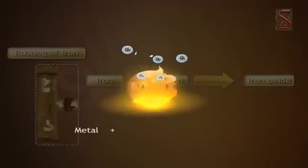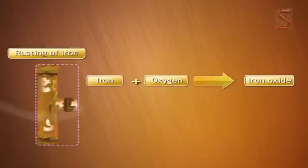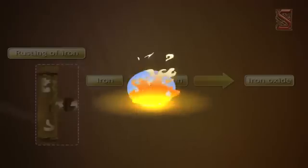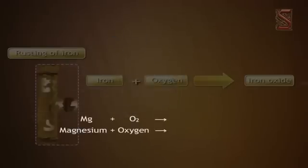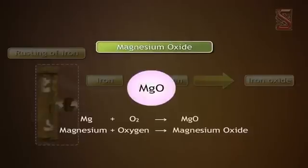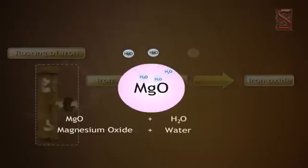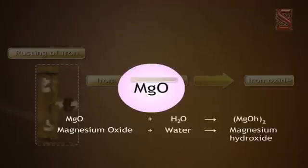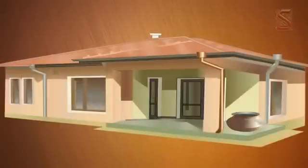For example, if you burn a strip of magnesium, magnesium will burn in oxygen to form magnesium oxide. Magnesium oxide dissolves in water to form magnesium hydroxide, which is basic in nature.